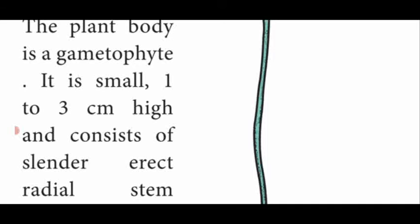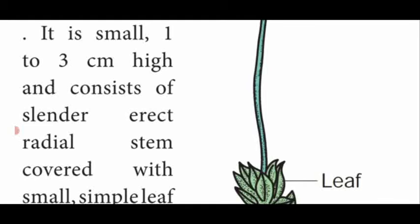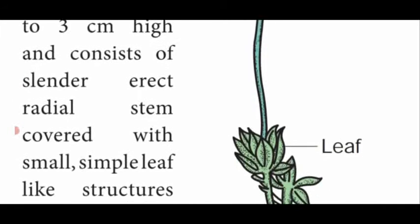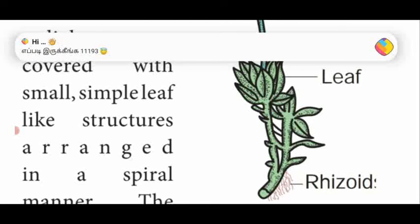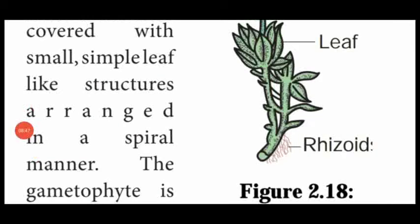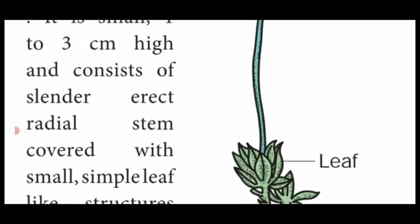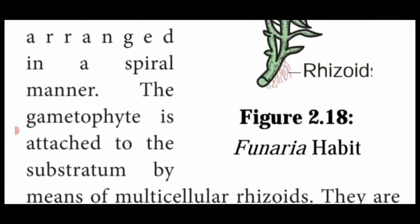The plant body of Funaria is known as the gametophyte. It is very small, with a height of 1 to 3 centimeters. It consists of a slender, thin, erect, radial stem covered with small, simple leaf-like structures arranged in a spiral manner. These are not true leaves but leaf-like structures. The entire plant body is attached to the rocky region, trunk of a tree, or soil with the help of root-like structures known as rhizoids, which are multicellular in structure.